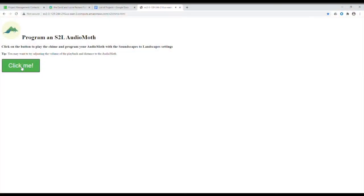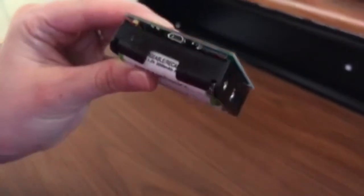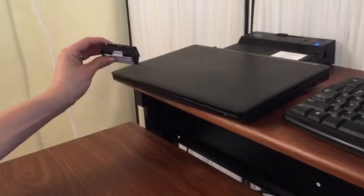Click the button that says click me to play the chime. Make sure to hold the Audio Moth close enough to your device so that it will be able to hear the chime sound.